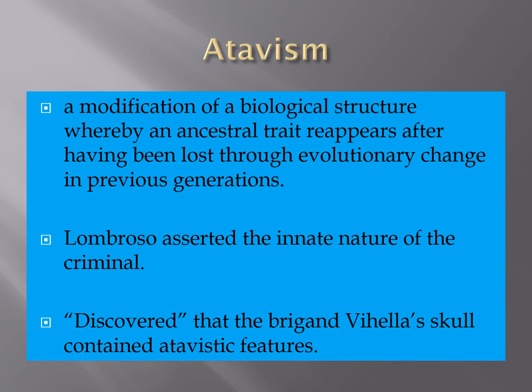Atavism became a center feature of Lombroso's study — it's the modification of a biological structure whereby an ancestral trait reappears after having been lost through evolutionary change in previous generations. Lombroso asserted this explained the innate nature of a criminal — how you could have families where the fathers and grandparents were not criminals, but then the children were. He discovered this notion through looking at the brigand Hella's skull, which he said contained atavistic features not part of his other family members.